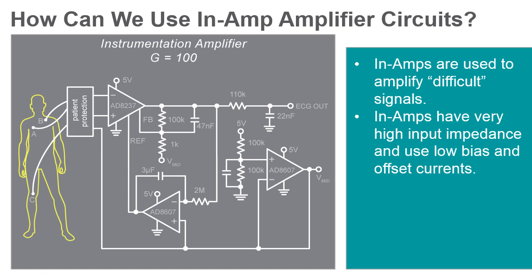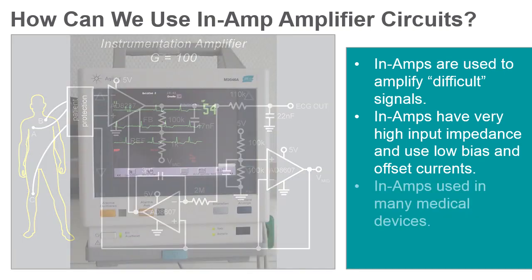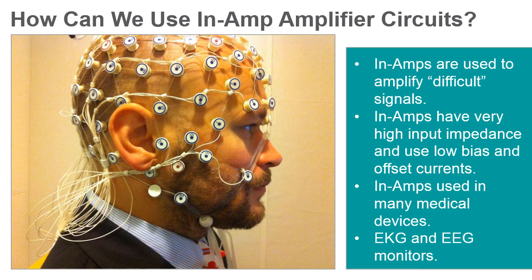The primary use for in-amps is amplifying signals from low-level output transducers in noisy environments. Amplifying pressure and temperature transducer signals are common in-amp applications. They are also widely used in medical equipment such as EKG and EEG monitors.